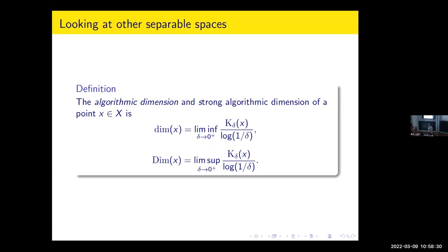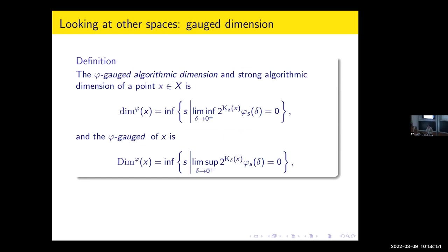Once you have Kolmogorov complexity at precision delta, you can have Hausdorff dimension — just take the ratio. You can even have any gauge function in place of the usual gauge function, and you can define effective dimension in a separable metric space X with a gauge function phi.